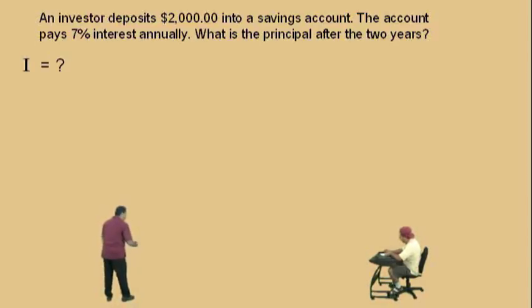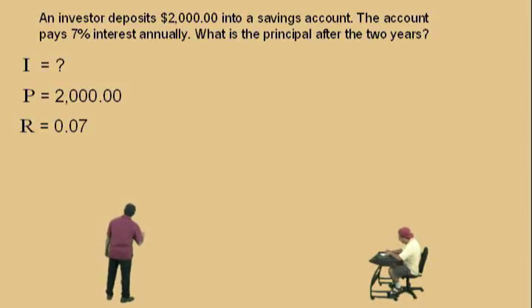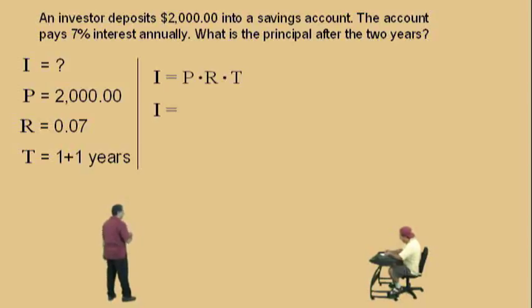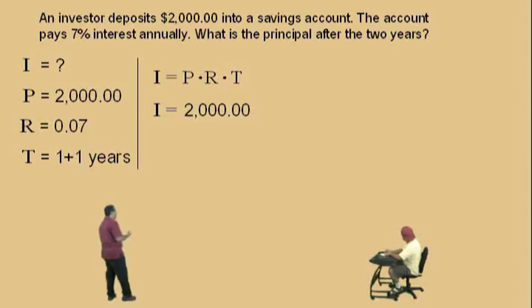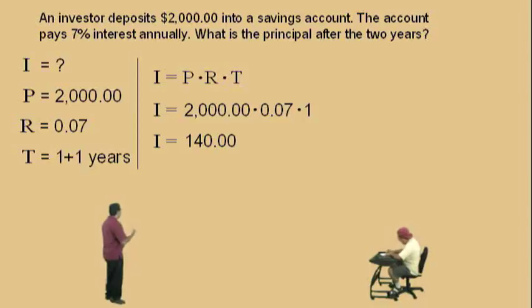We're going to figure out what our interest is. Our initial principal is $2,000. The rate as a decimal is 0.07. Notice our time is two years, but we have 1 plus 1 because we've got to do two calculations. For the first year: I equals PRT. Our principal is $2,000, our rate is 0.07, and the time is one year. The product is $140 — that's the interest earned after the first year.